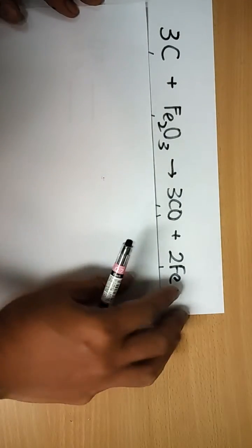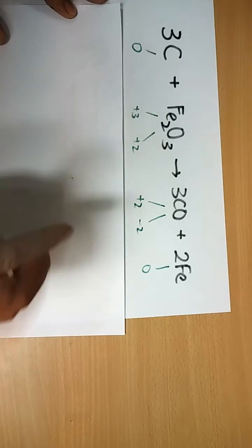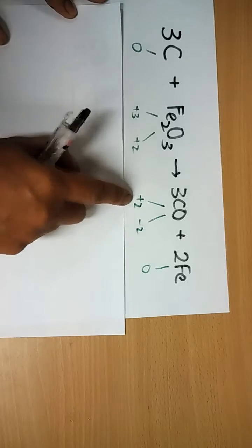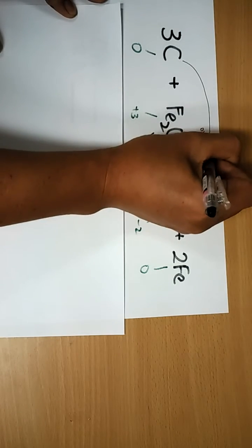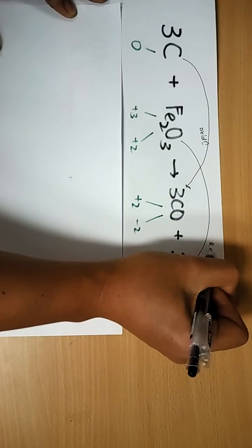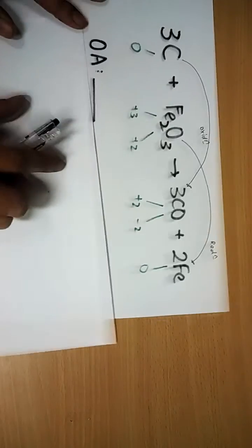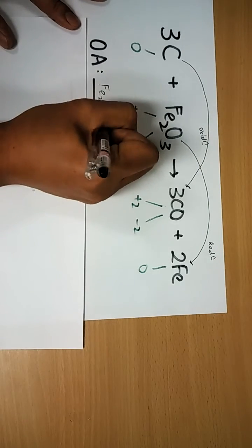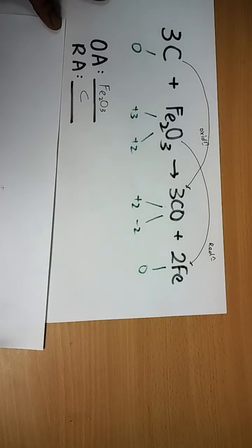Next reaction — same approach: work out the oxidation states. One species goes from 0 to plus 2 — that is oxidation. Another goes from plus 3 to 0 — that is reduction. The one that is reduced is the oxidizing agent; the one that is oxidized is the reducing agent.